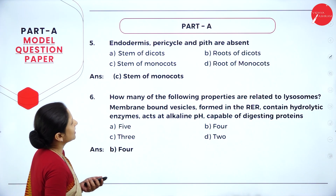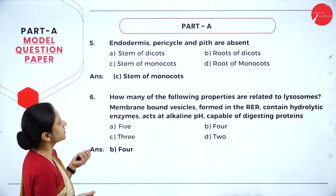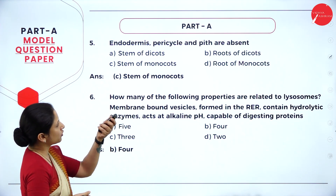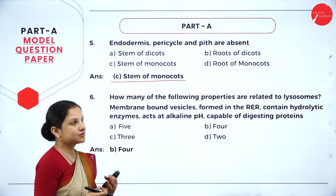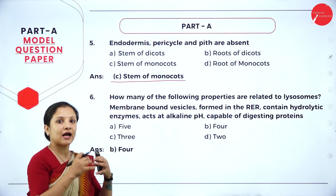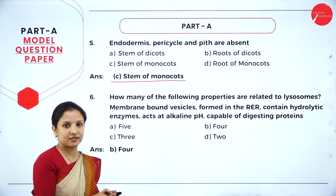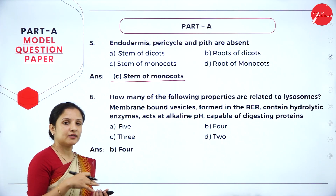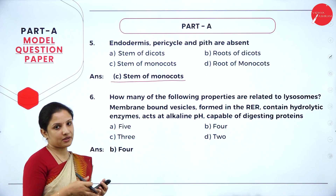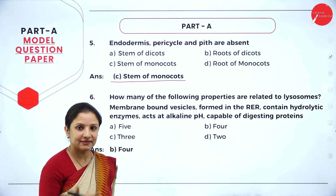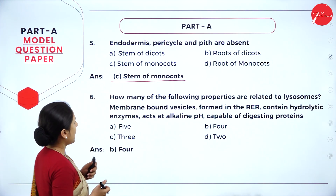Question 5: endodermis, pericycle, and pith are absent in which structure — stem of dicots, root of dicots, stem of monocots, or root of monocots? It is the stem of monocots, because in monocot stems there is no endodermis, pericycle, or pith. Instead, there is a large mass of ground tissue parenchyma in which vascular bundles are scattered — larger towards the periphery and distributed haphazardly towards the middle.